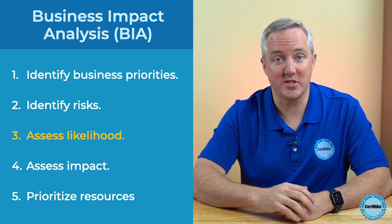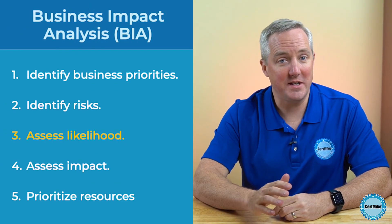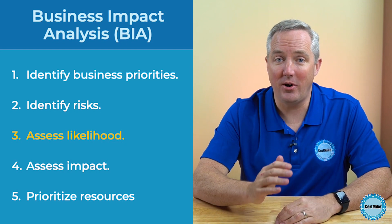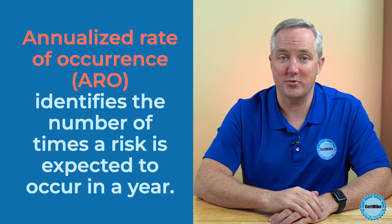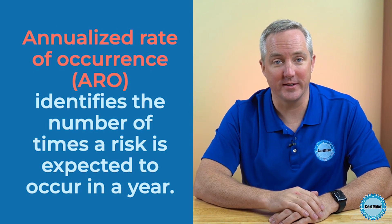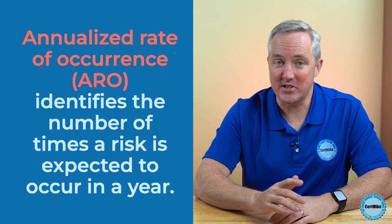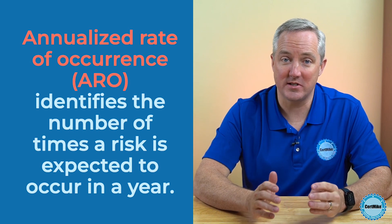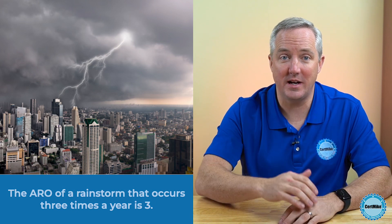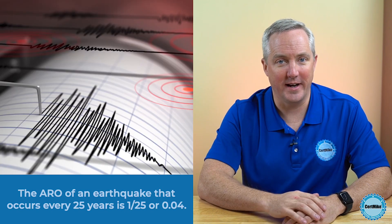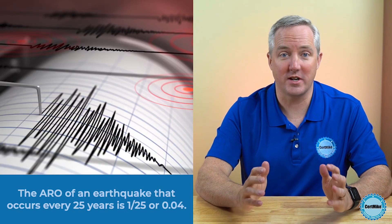Step three brings us to assessing the likelihood of those risks — basically, how often each risk is likely to occur. We document this using a metric called the annualized rate of occurrence, or ARO: simply the number of times a risk typically occurs each year. For example, if we expect a heavy rainstorm three times a year, the ARO would be three. If we expect an earthquake once every 25 years, that would be an ARO of 1/25, or 0.04.